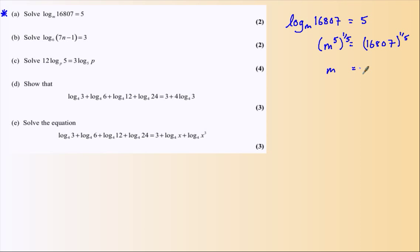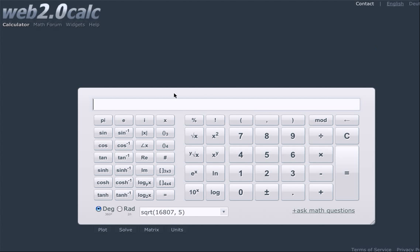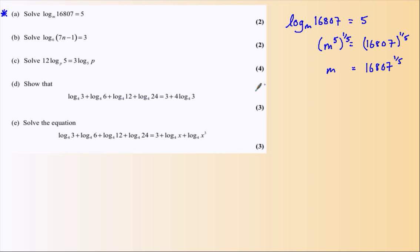That's the fifth root of 16807. The fifth root is 7, that's a nice number, which is always a good sign. So we've got m as 7. That's part A done.